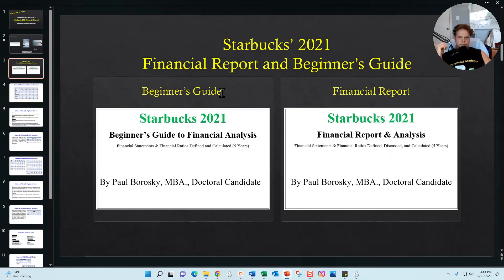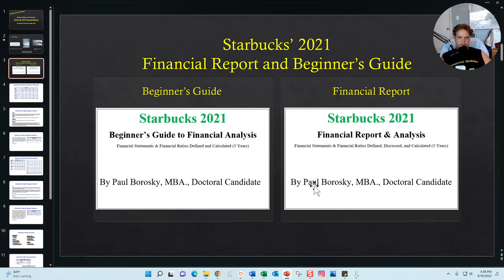My financial reports come in two flavors. One is the Starbucks 2021 Beginner's Guide. All of the beginner's guide content is also found in my financial report — for the financial report, I built off and added more content to the beginner's guide. So I do have two reports: the Starbucks Beginner's Guide as well as the full Financial Report.